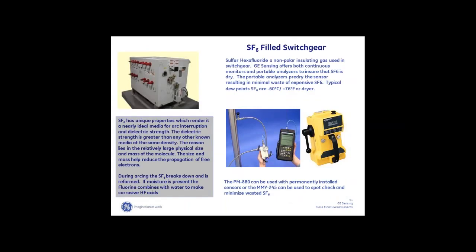In switchgear, SF6 — sulfur hexafluoride — is an insulating gas. The theory is that it quenches arcs: when a big contactor in an electrical closure closes, the sulfur hexafluoride quenches the arc and prevents it from propagating. What happens is the molecule blows apart, and if there's any water, it combines with fluorine to form hydrofluoric acid, which is very corrosive. Typically the probe would be installed permanently inside the contactor and a portable is used just to spot-check, since SF6 is a very expensive gas and you don't want to waste it.